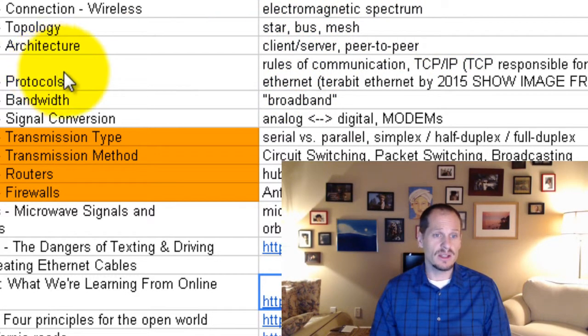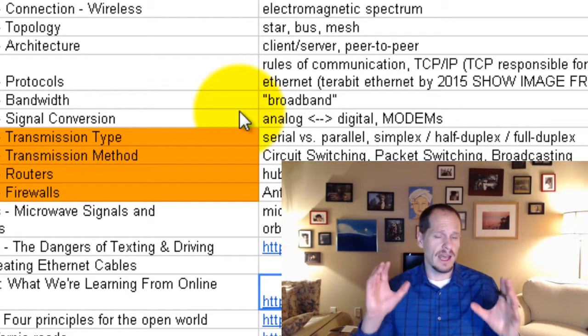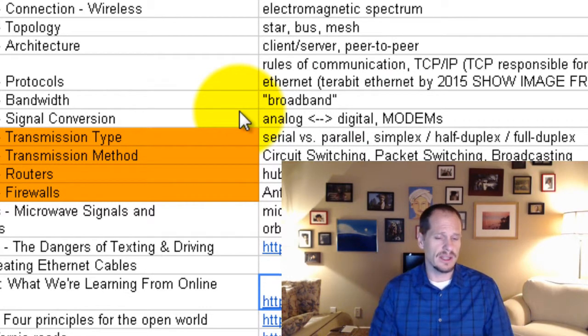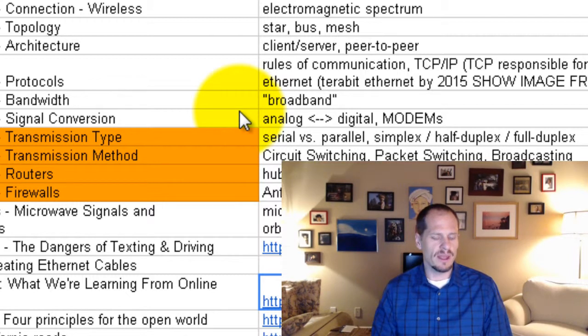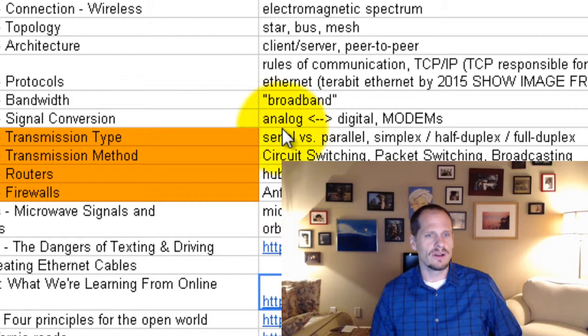And then we also looked at rules of communication, protocols. And we looked at how modems work, and how if we have a lot of data that can transfer over a connection, that's considered broadband, and that's the bandwidth measure. And if we have a connection where not a lot of data can travel over the connection, that's considered narrowband, like an old dial-up modem would definitely be considered a narrowband connection. And so those are the things we've learned so far.